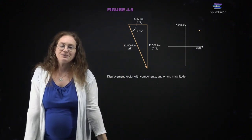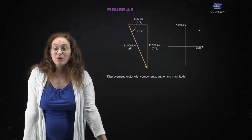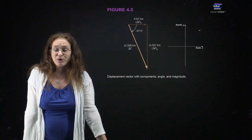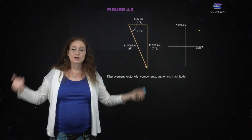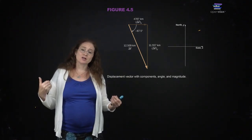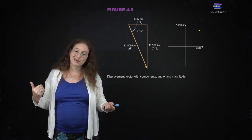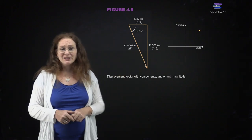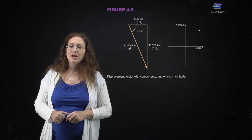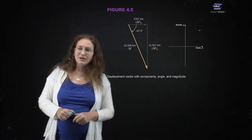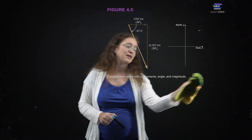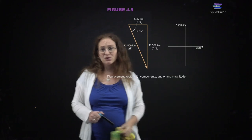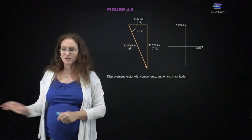You're frequently going to need to break things up into their components. When you are given a physics problem, the first thing you want to do is draw a picture. On that picture, indicate your coordinate system. Then usually the first thing we do is start breaking the vector up into the coordinates we've chosen — in this class, we're usually going to use Cartesian coordinates.